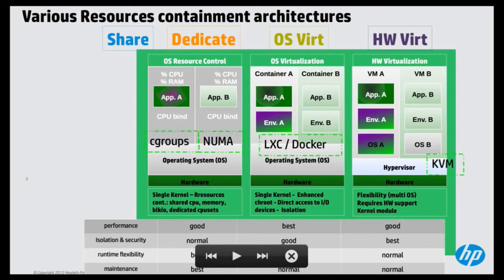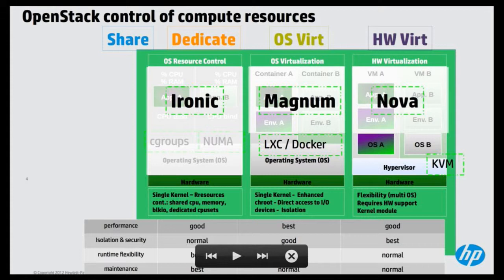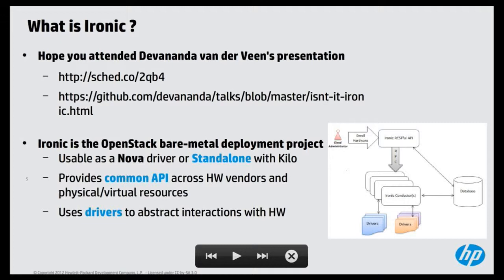If we map that to how OpenStack controls those different ways of managing resources: on the right-hand side you have the Nova controller, which manages virtual machines. There's the new project called Magnum which does the same for containers in an OpenStack environment. And when you want to deal with bare metal, you have Ironic — developed to control bare metal deployment and provisioning — and that's where we'll look more closely at the innovation we can put in place.